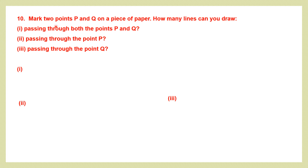Question 10: Mark two points P and Q on a piece of paper. How many lines can you draw passing through both points P and Q? You can draw only one line passing through both points P and Q. So the answer is only one line.